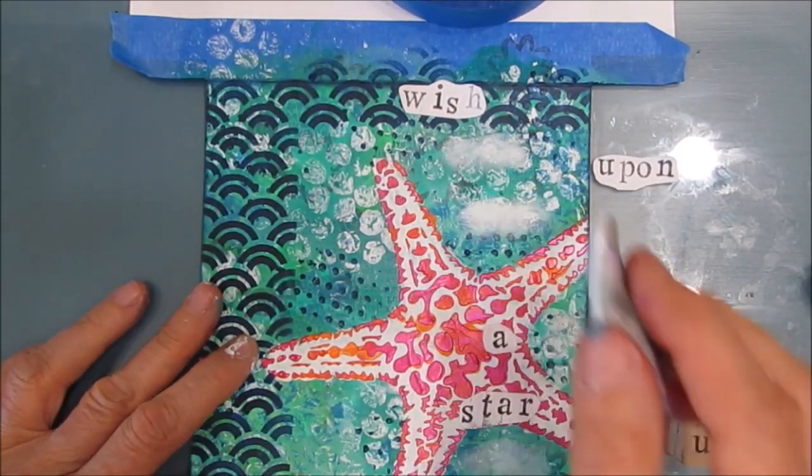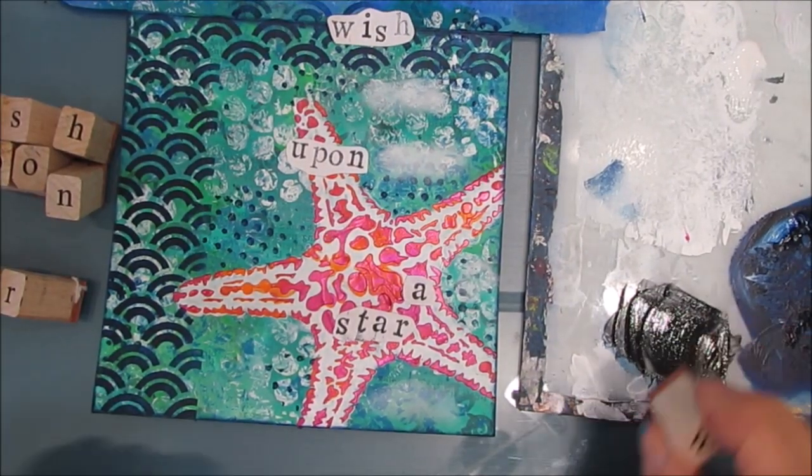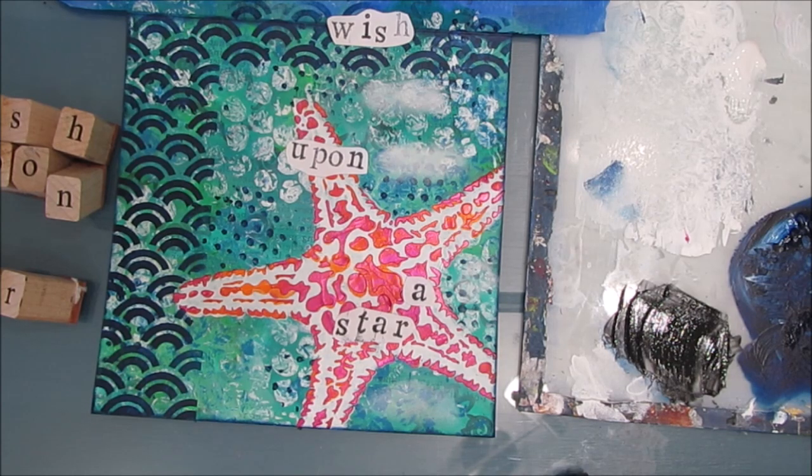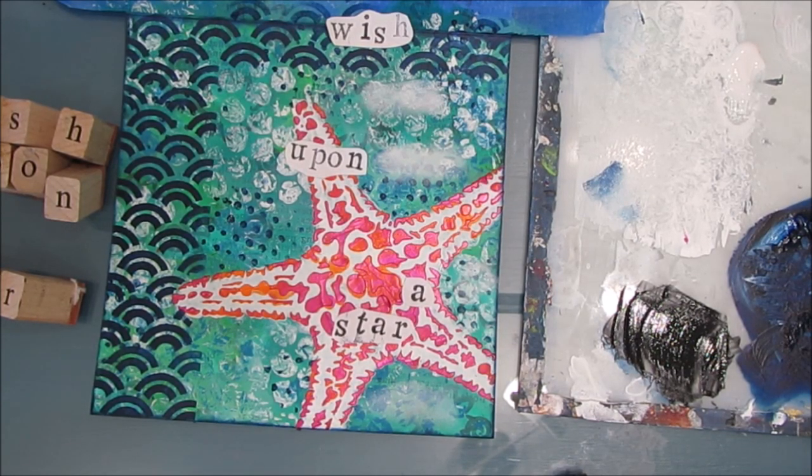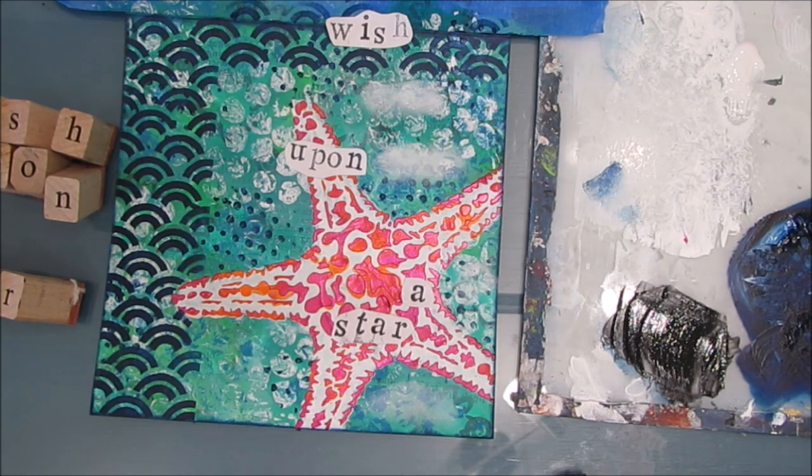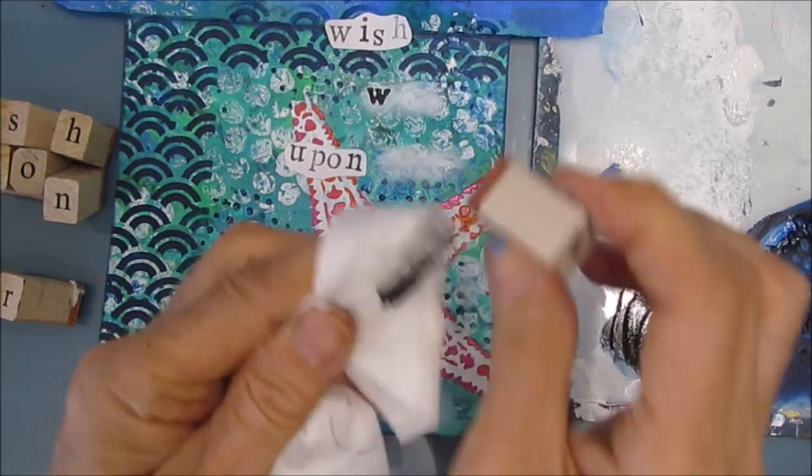When I stamp, I always stamp with archival ink on paper first and move it around to figure out exactly where I want to stamp them and if there's enough room. Then I stamp into black acrylic paint.